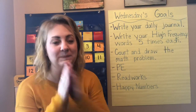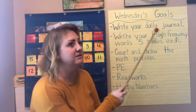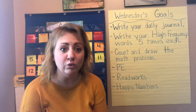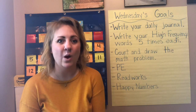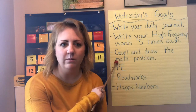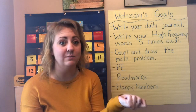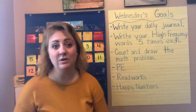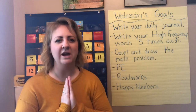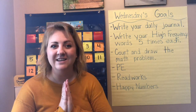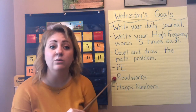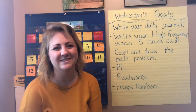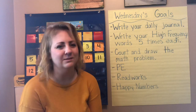Awesome job. We're going to go over Wednesday's goals. You're going to write your daily journal like always. You're going to write your high frequency words five times each — Y-O-U and play, P-L-A-Y. You're going to count and draw your math problem — Mrs. Swain's going to have some eggs and you're going to pass them out equally. Remember, equally means the same as, so make sure everyone has the same number. And then PE this week we're doing some yoga — practicing our breathing, stretching, and exercising. I also want you to go on to ReadWorks — I have some more water cycle stories for you on there and happy numbers to practice your math, boys and girls. Have a wonderful Wednesday. Awesome possum — I'll see you tomorrow.